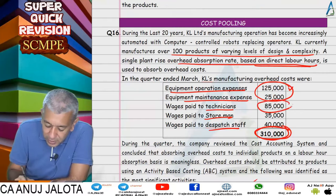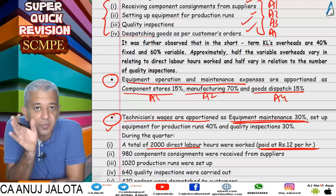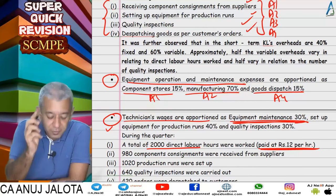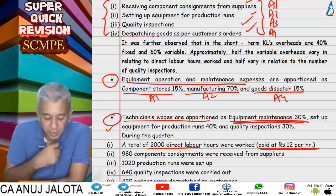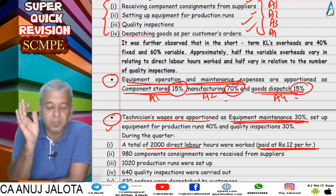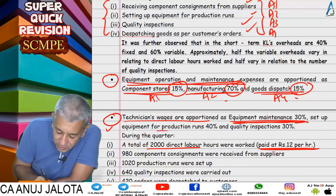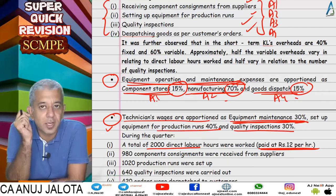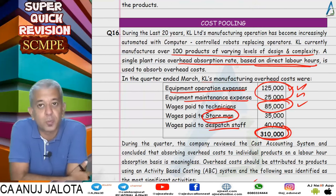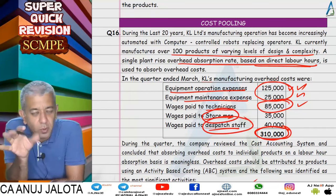Technicians' wages of 85,000 were split: 30% relates to equipment maintenance, so that 30% was allocated in the same ratio as equipment maintenance expenses — A1: 15%, A2: 70%, A3: 15%. The remaining 70% splits as 40% to production runs and 30% to quality inspection. Storemen's wages go directly to A1 (receiving) and dispatch staff wages go directly to A4 (dispatching).